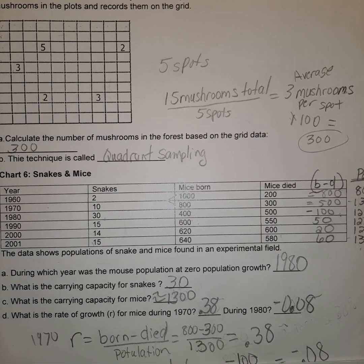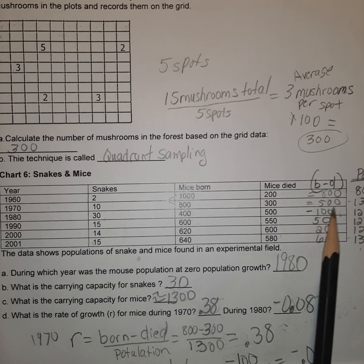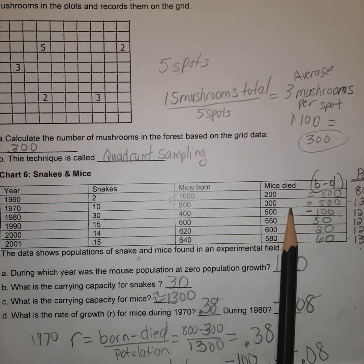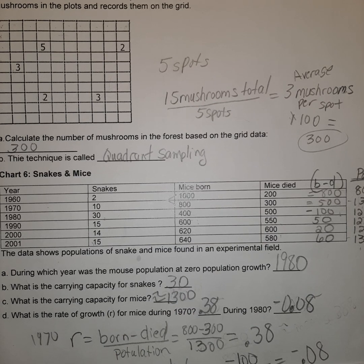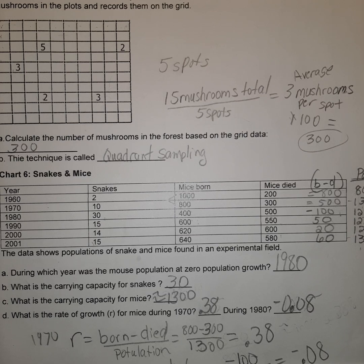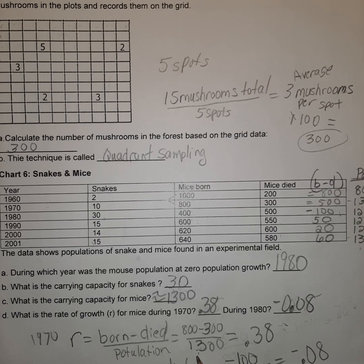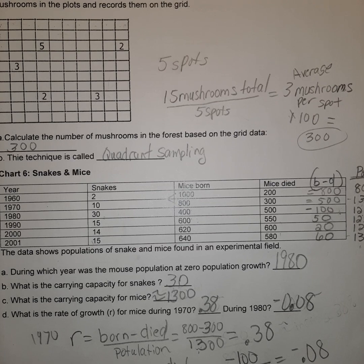The growth rate is calculated by taking births minus deaths, divided by the current population. In 1970 there were 800 born and 300 died, and the population reached 1,300 after adding the 500 new ones to the original 800. That gives approximately a 38% increase. It would be about 60% if calculated against the previous population — you'd need to check your assignment to see which method they want: total current population or the previous population. In 1980 we saw a negative 8% decrease in mice.